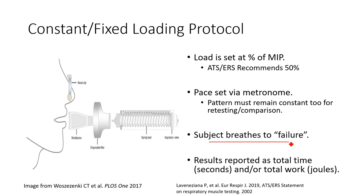In the constant load protocol, the patient breathes until they say they're done, reach the predicted time of 12 minutes, or produce three consecutive failed breaths — where the spring-loaded valve doesn't open. The resistance is set by winding up a coil on the valve; if enough pressure is generated, the valve moves and air flows in. We keep cadence around 20 breaths per minute to avoid hyperventilation.